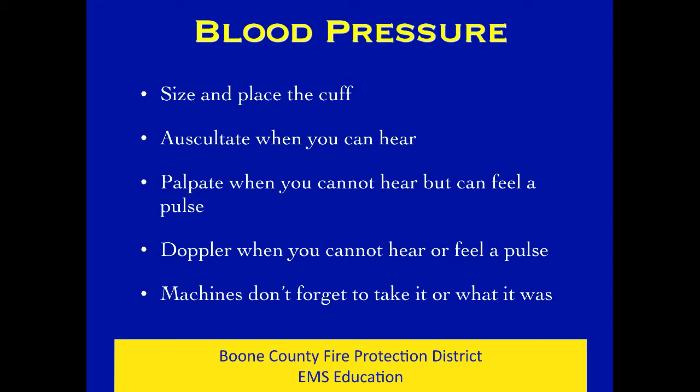After estimating pressure qualitatively from the radial pulse, you want to quantitatively assess it - measure it. We want to talk about how to size and place the cuff, when to use the diaphragm versus the bell, when to palpate when you can't hear, and how to use a Doppler. Machine pressures are convenient - they don't forget and keep track automatically - but they're not always right. A good practice is to do a manual pressure first, then immediately put the machine cuff on the same arm to verify.